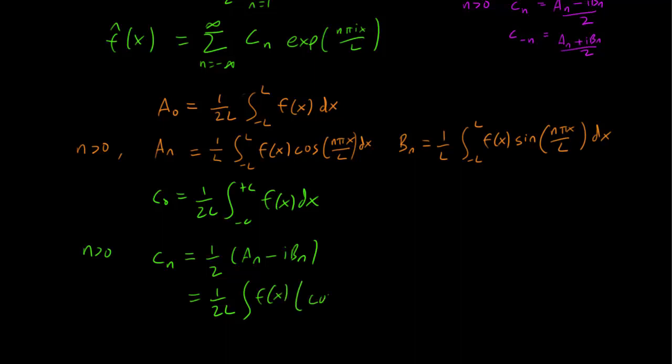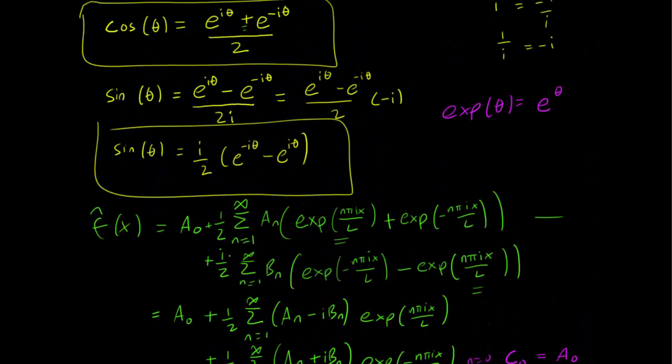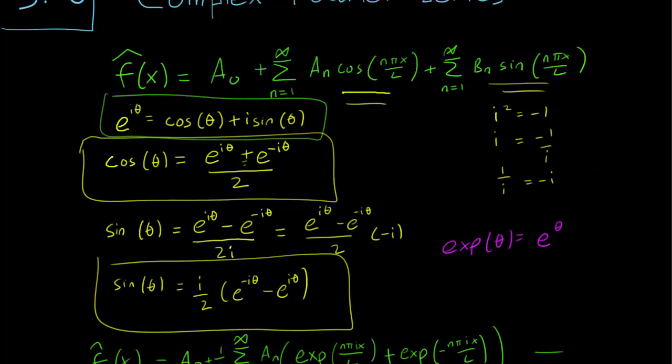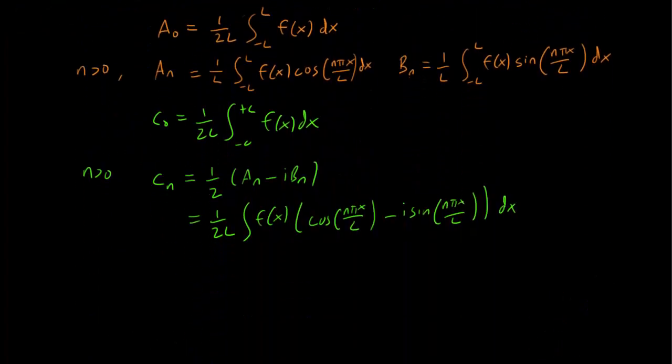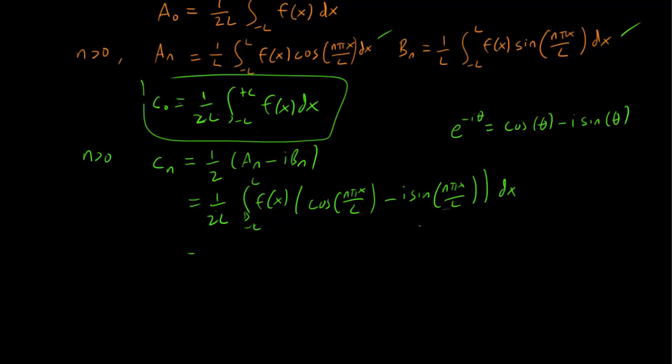f(x), we take the cosine from the aₙ, cos(nπx/L) - i*sin(nπx/L)dx. Now the astute student might have noticed that this almost looks like the form of Euler's formula over here. So e^(iθ) = cos(θ) + i*sin(θ), but there's also a negative form. We have e^(-iθ) = cos(θ) - i*sin(θ). Replacing θ with -θ, the sine is an odd function so the minus sign comes out, and using that we get 1/(2L) ∫₋ₗˡ f(x) times the exponential of the negative of nπix/L dx, simplifying it in that way.